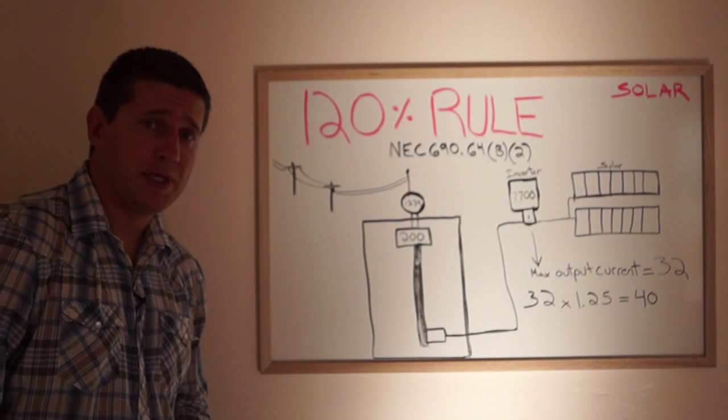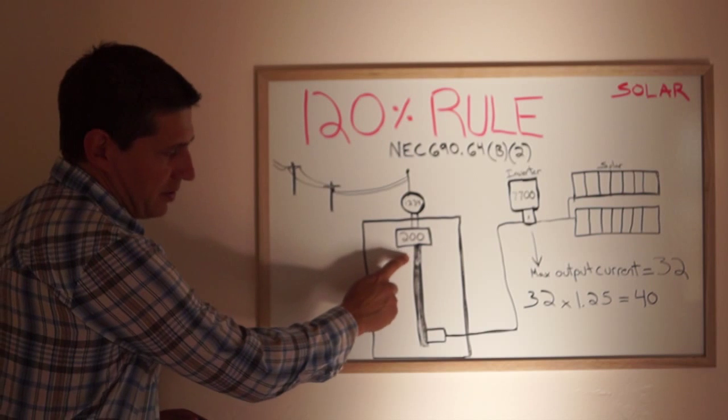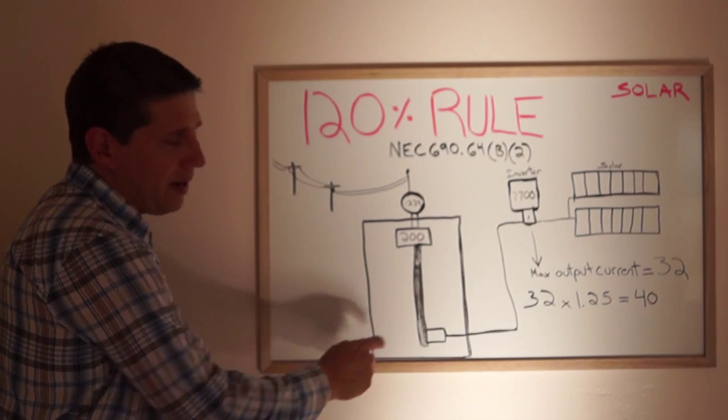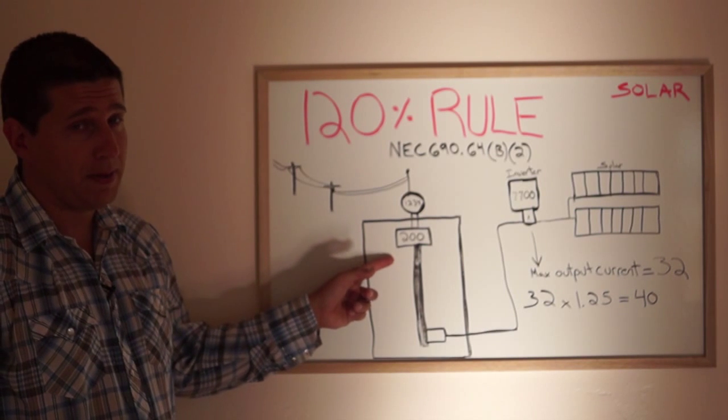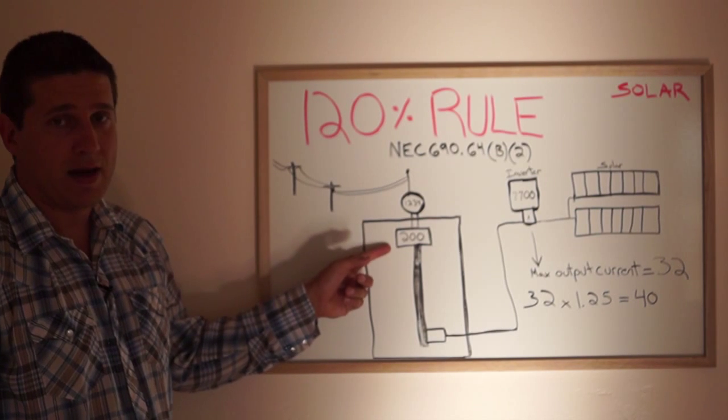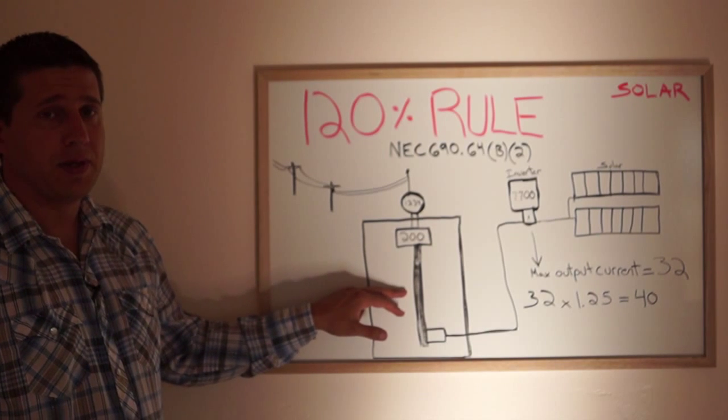And what the 120% rule states is that after this breaker there's a bus bar, and that bus bar has a rating. Generally if the breaker has a 200 amp main breaker located on it, on the panel, generally that bus bar is 200 amps as well.